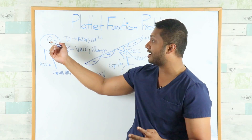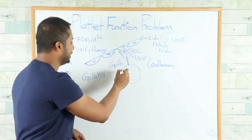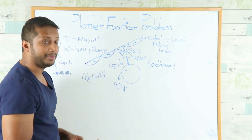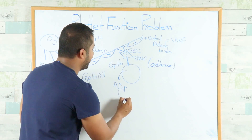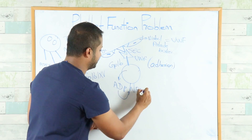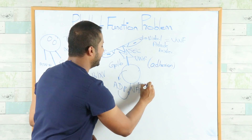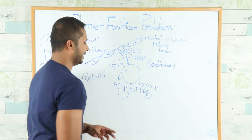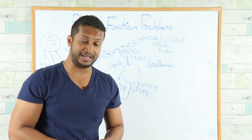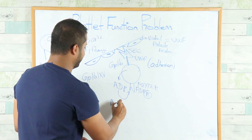After adhesion, the platelet degranulates and releases its contents — most importantly ADP. ADP is released and binds to its own receptors, known as ADP receptors or P2Y12 receptors. Once ADP binds the ADP receptor, you get the next step called activation.